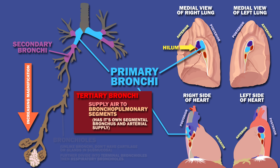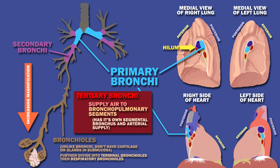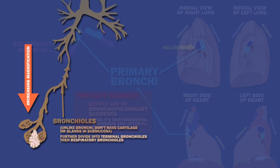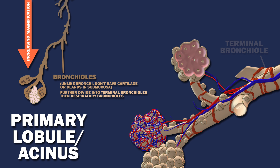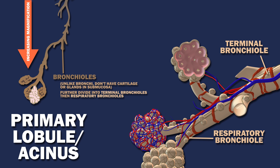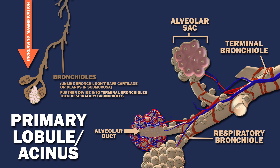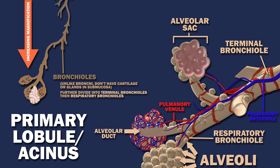The bronchi branch into bronchioles. The primary lobule, otherwise called the acinus, is the functional unit of the lung. It is composed of a single terminal bronchiole, numerous respiratory bronchioles, alveolar ducts, alveolar sacs, and around 10,000 alveoli. Pulmonary blood is delivered to it by a pulmonary arteriole and taken away by a pulmonary venule.